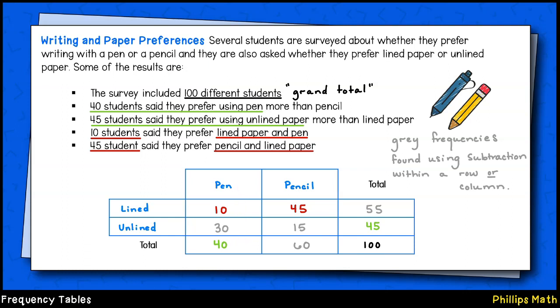We are told 45 students prefer unlined paper compared to lined paper. Once again, this is a marginal frequency which is found at the end of the row marked unlined.